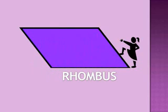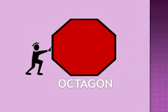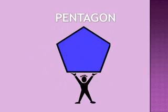This is a rhombus. It has four equal straight sides. It is different than a square because it is on an angle, or leaning. This is an octagon. It has eight equal straight sides. This is a pentagon. It has five equal straight sides.